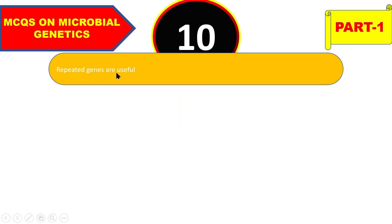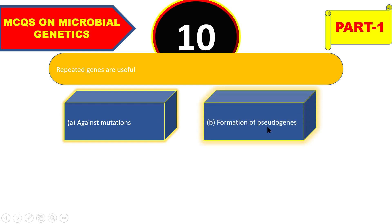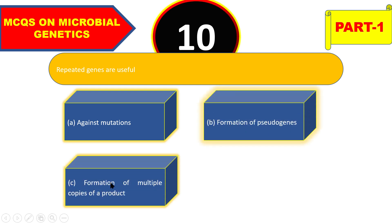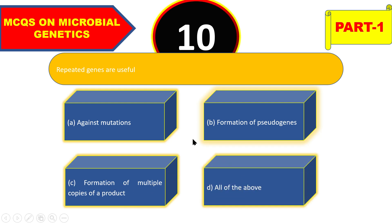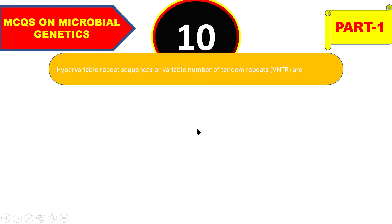Next question: repeated genes are useful against mutation, for formation of pseudogenes, for formation of multiple copies of the product, or all of the above? The right answer is all of the above — against mutations, formation of pseudogenes, and formation of multiple copies of a product.